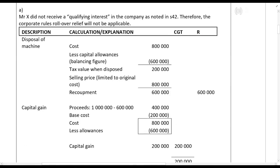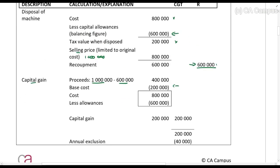For the normal transaction: cost was 800,000 and tax value is 200,000, so the balancing figure — the capital allowance — is 600,000. The selling price is limited to the original cost of 800,000, giving a recoupment of 600,000. Then proceeds of one million minus 800,000 gives a capital gain of 200,000 rands. So there is a 600,000 recoupment and a 200,000 capital gain.